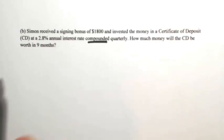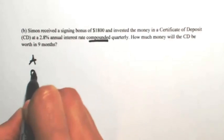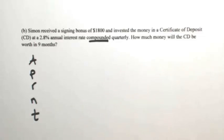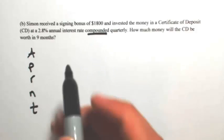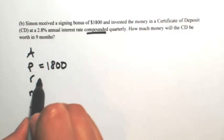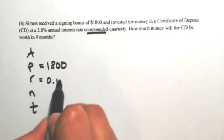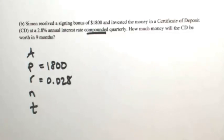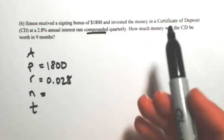So again, anytime you see this word compounded, we're going to use that formula that involves five variables. So A, P, R, N, and T must fill in everything that we know. So $1,800 is invested, so that's our principle. The rate is given as 2.8%, so as a decimal, you're going to move a 2 to the left, 0.028. And N is the number of times being compounded yearly, so not the total number of times, just for every year. So it's being compounded quarterly, so that's four times per year.